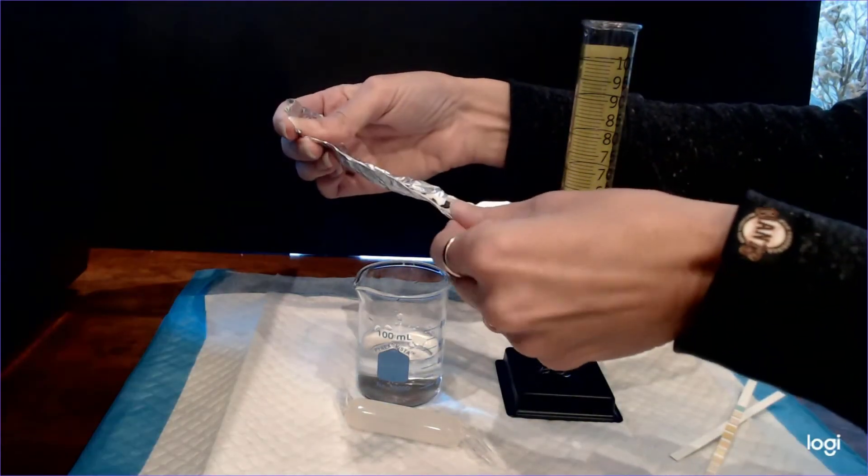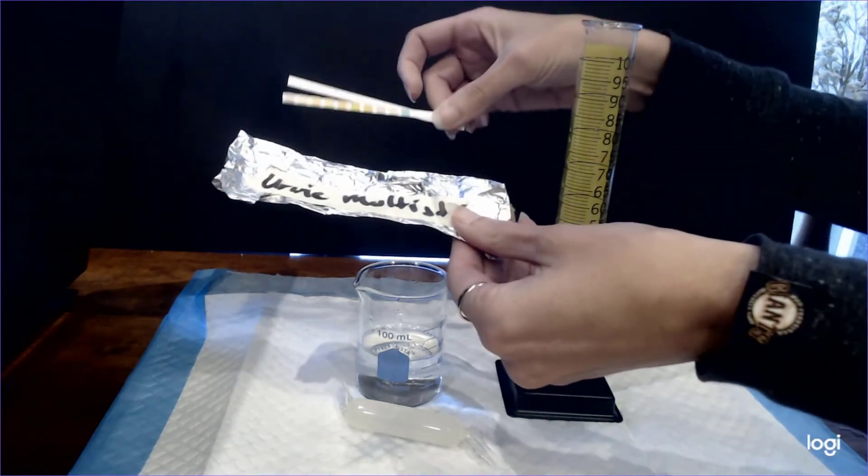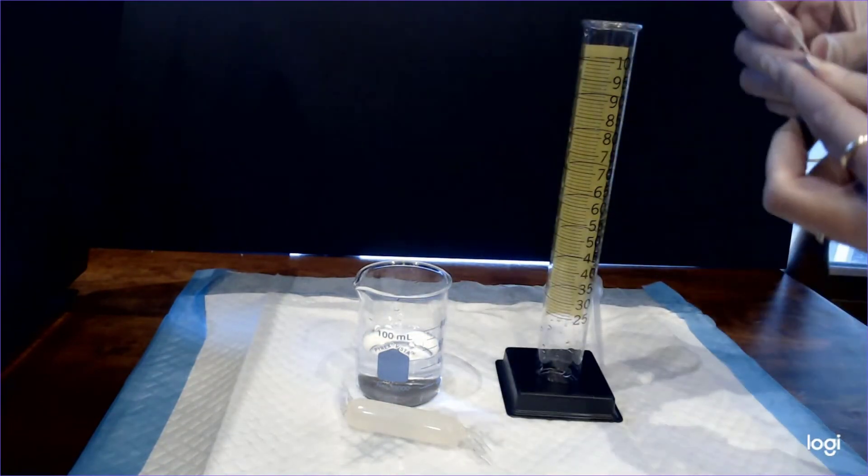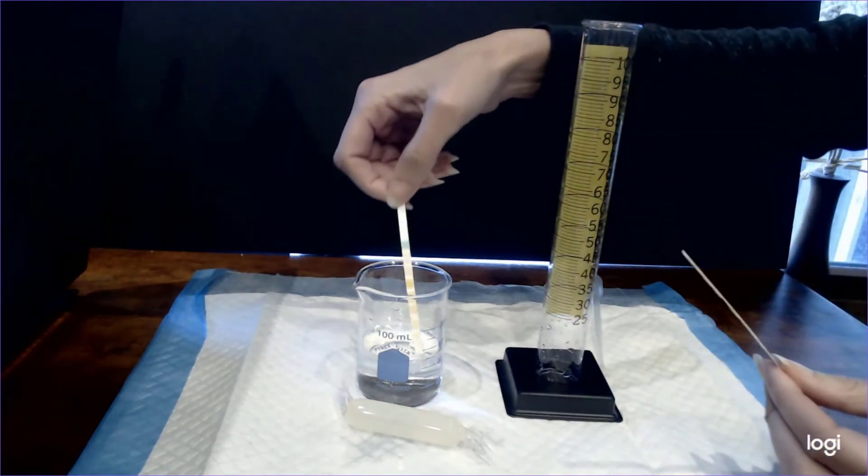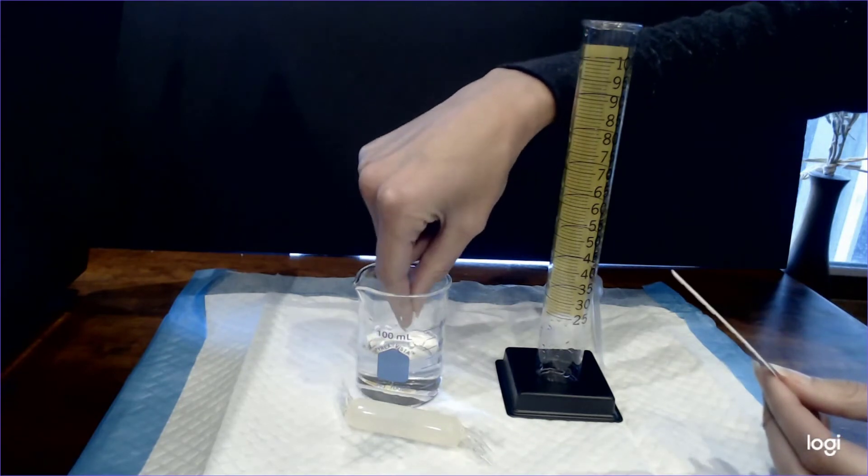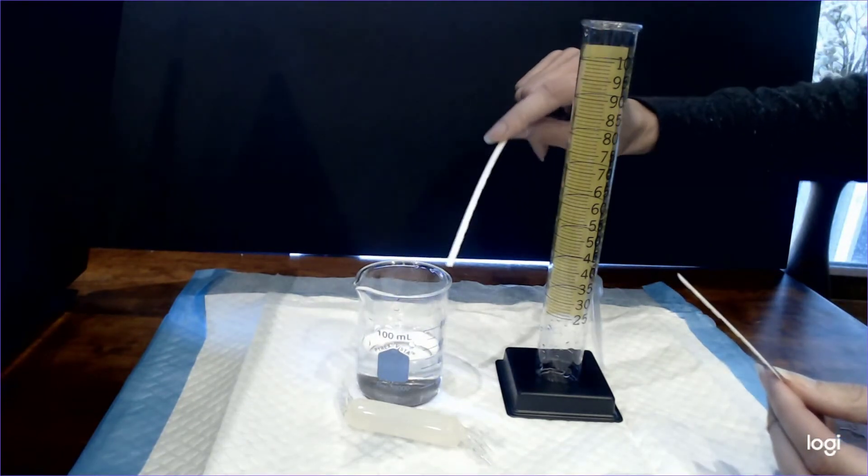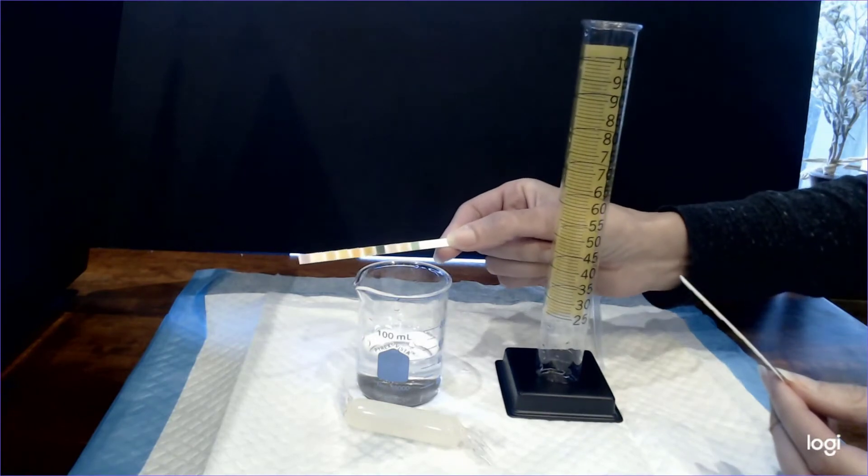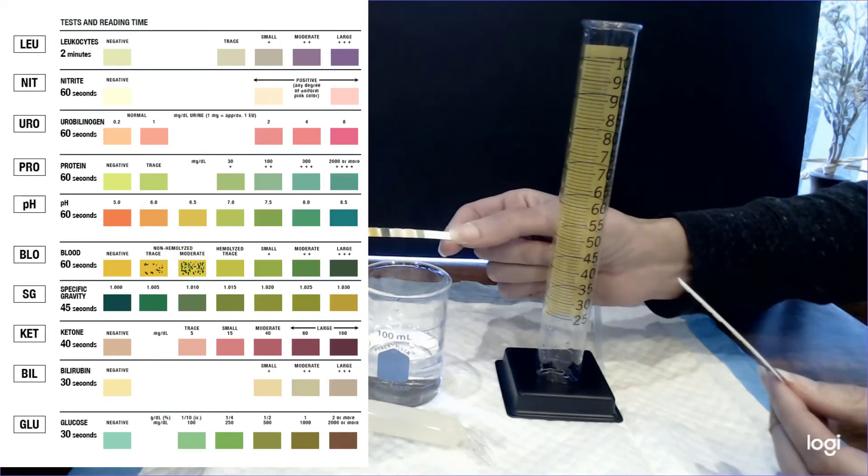We're going to take one of those dipsticks and we are going to dip it into the beaker so that every pad gets wet, and then we can go ahead and compare what we see on the dipstick with a color chart that is shown here.